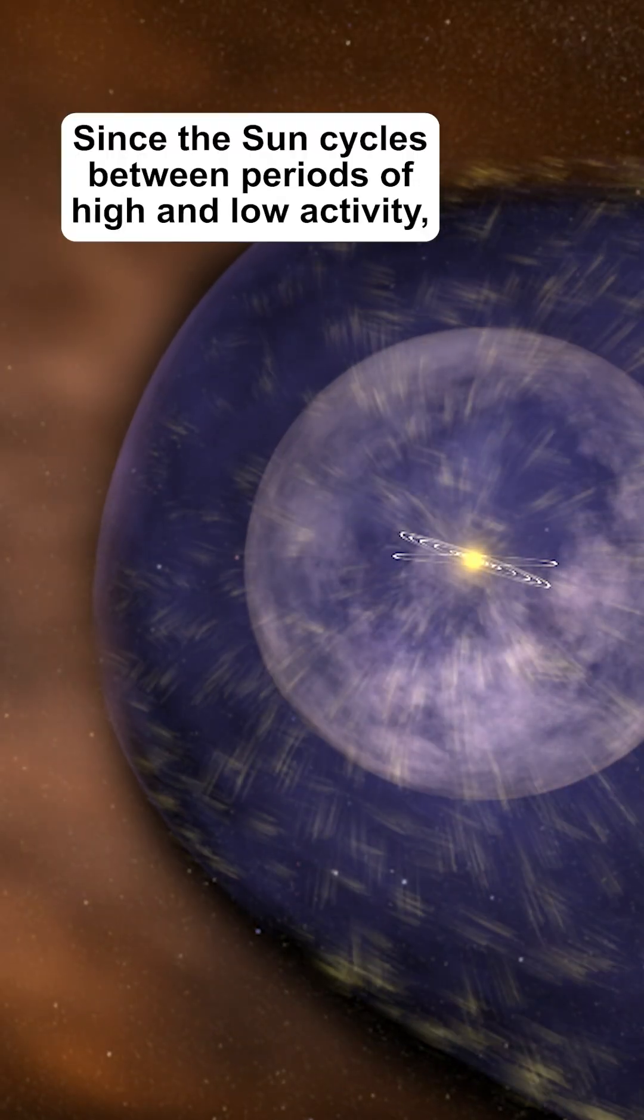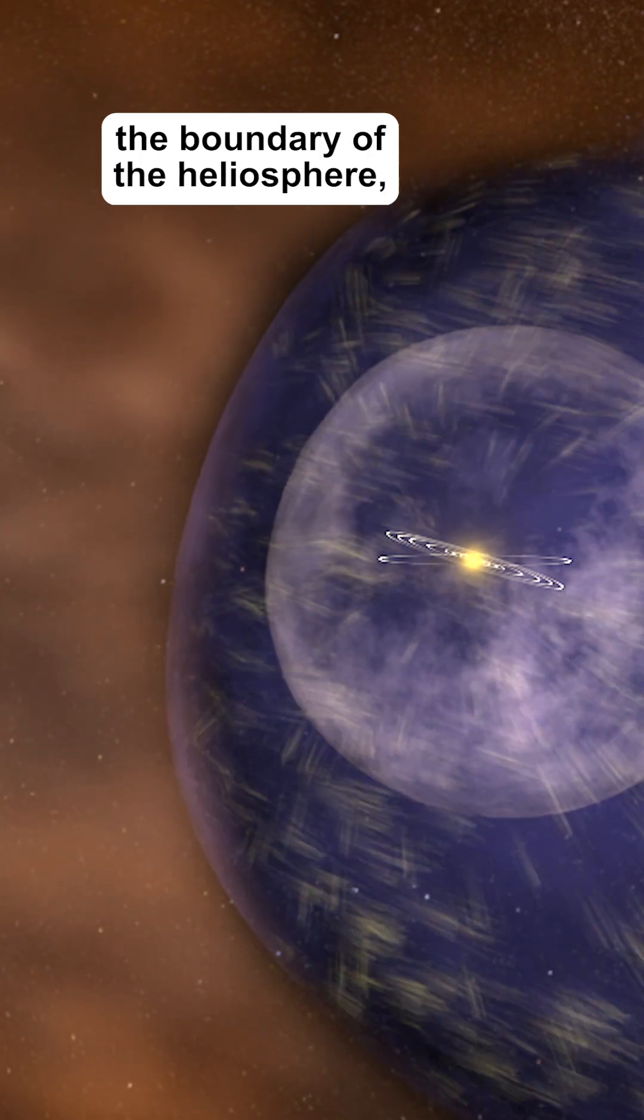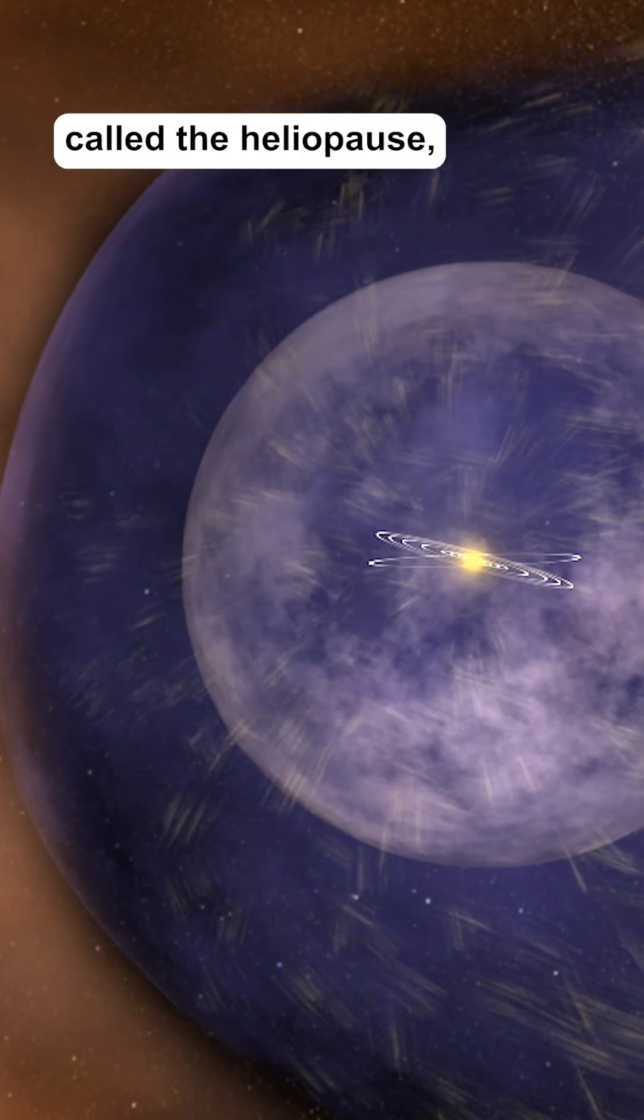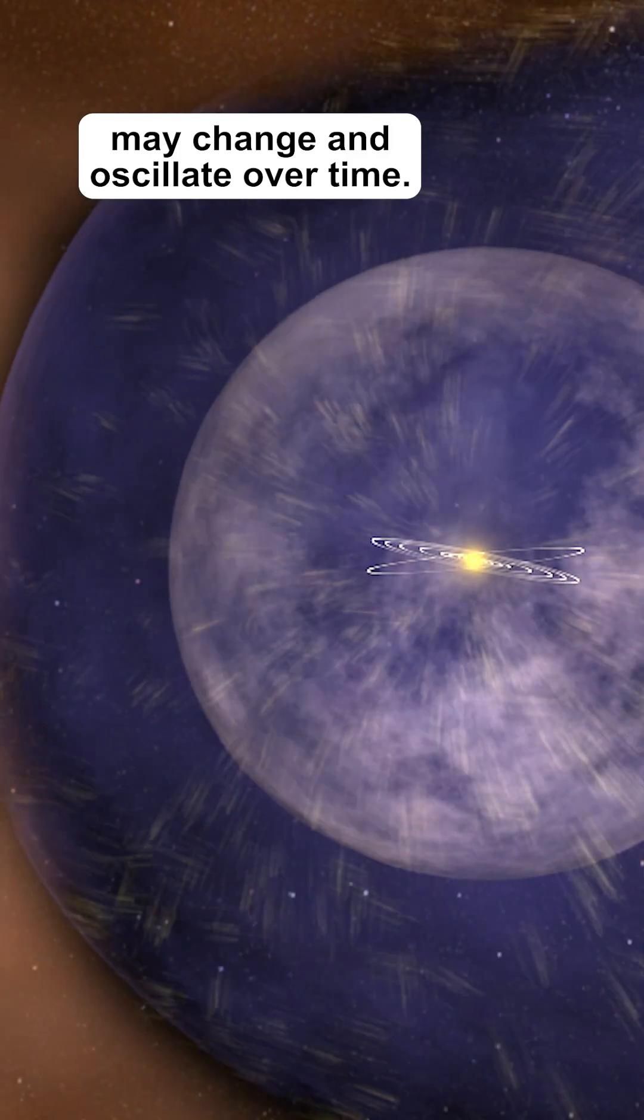Since the Sun cycles between periods of high and low activity, the boundary of the heliosphere, called the heliopause, may change and oscillate over time.